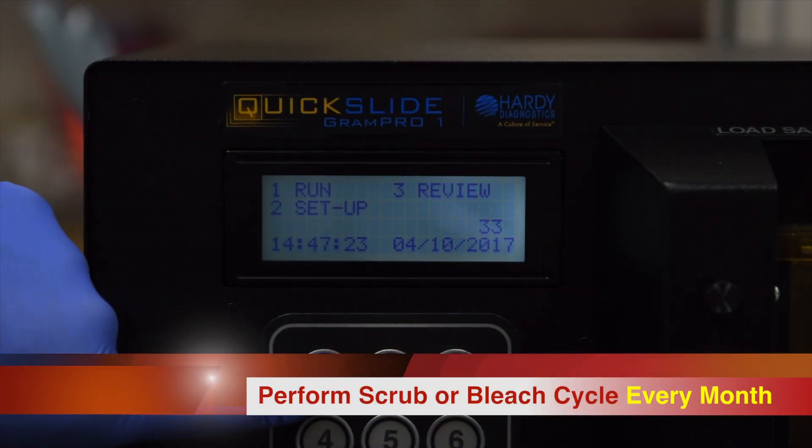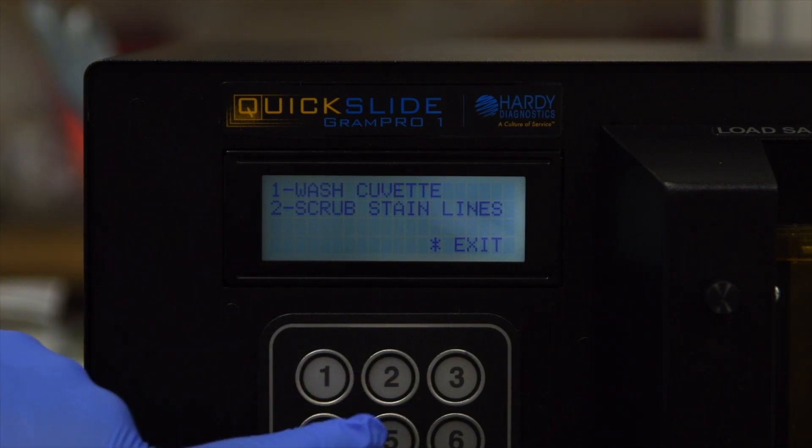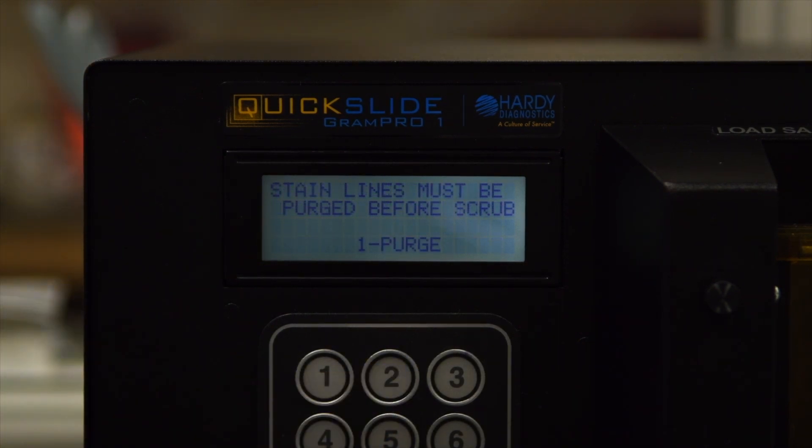Press 1 on the keypad to select Run. Press 2 to select Clean Cuvette. Press 2 again to select Scrub Stain Lines. When prompted, press 1 to select Purge.